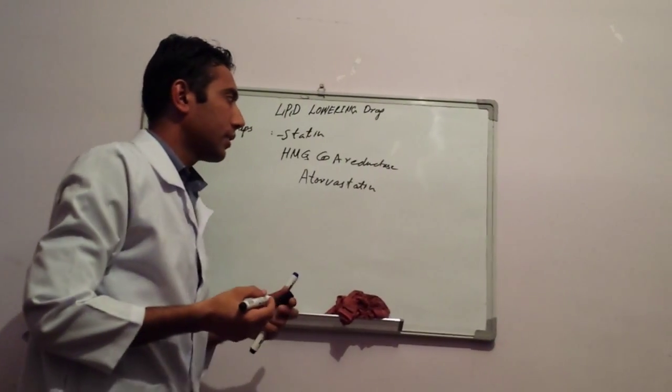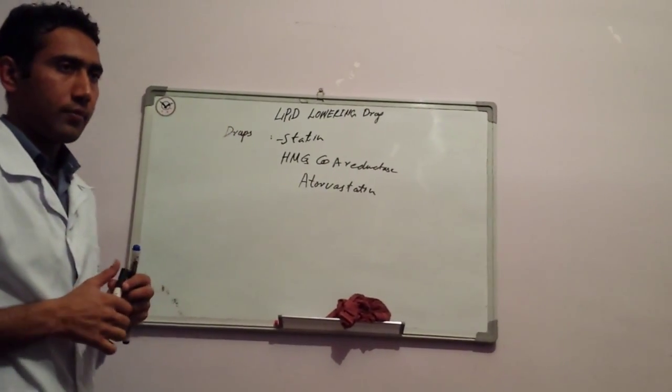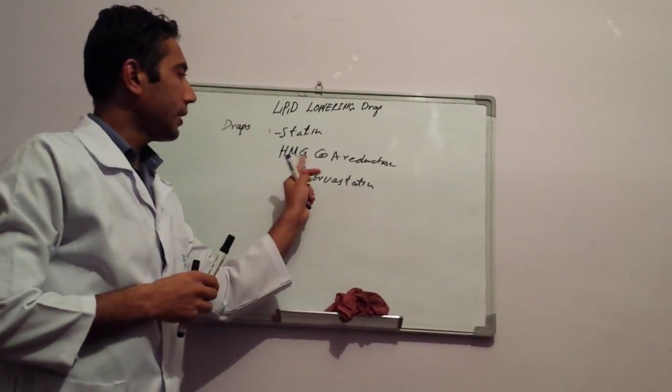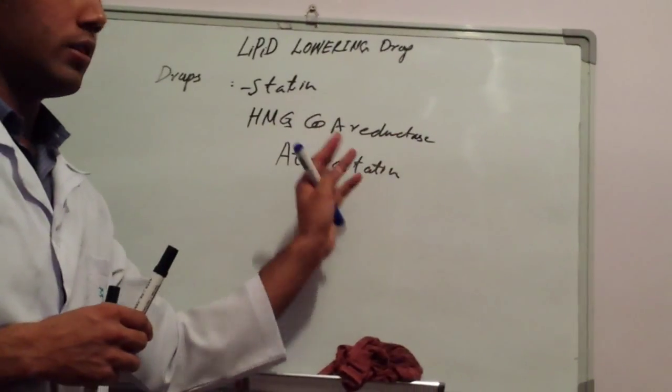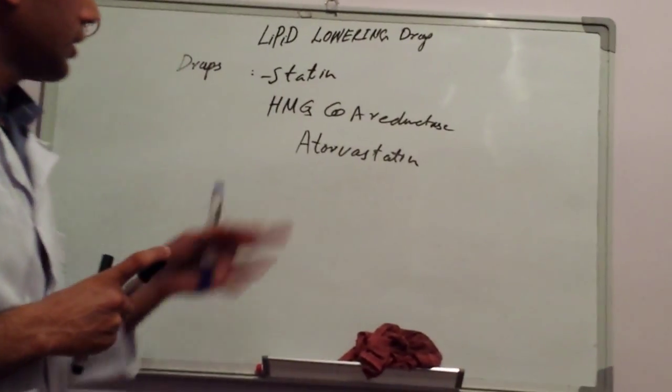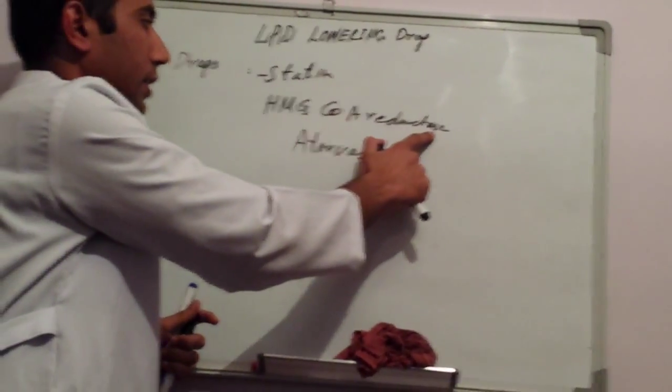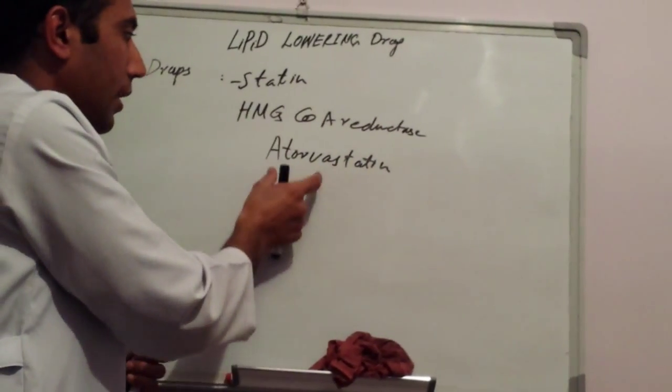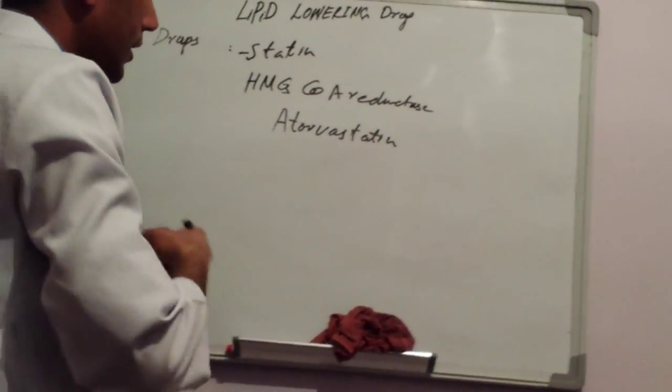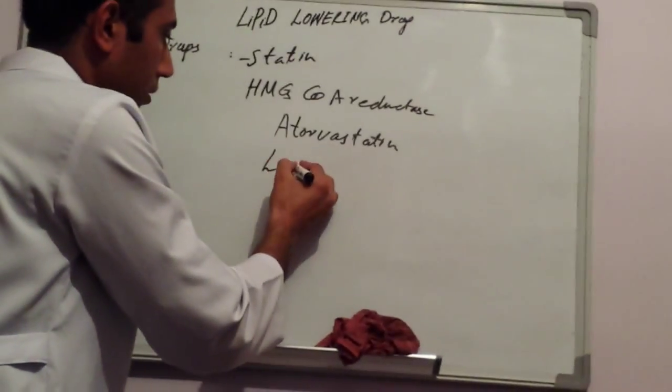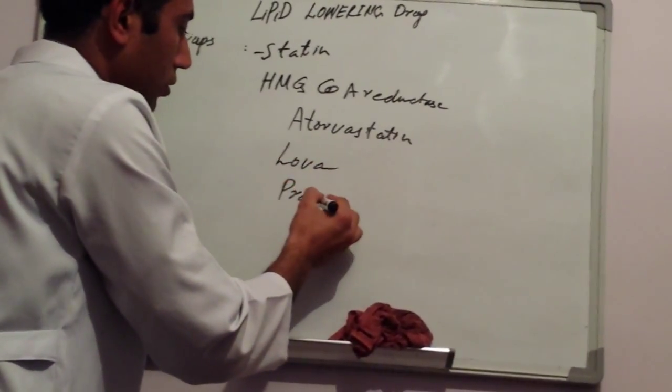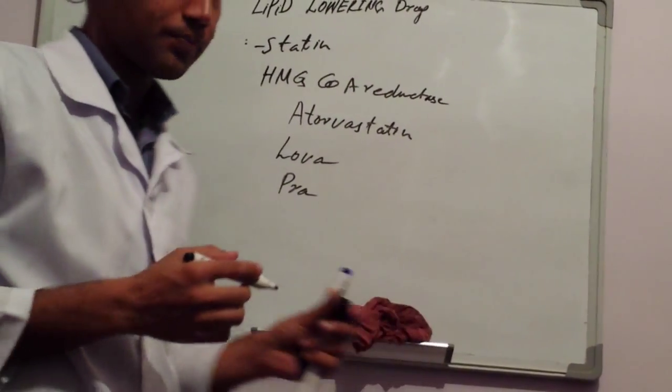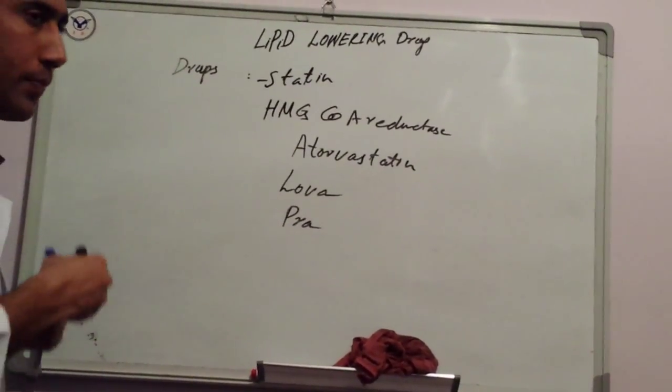This is the enzyme in the liver. If you don't have cholesterol in your diet, then automatically the liver will make new cholesterol using HMG CoA reductase. Last name is statin: Atorvastatin, Fluvastatin, Lovastatin, Pravastatin, Rosuvastatin, Simvastatin, etc. The other group is here.